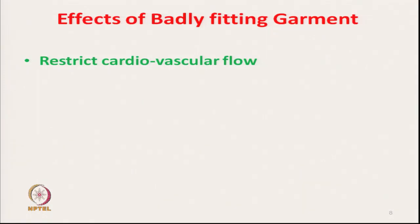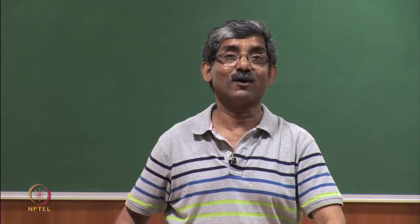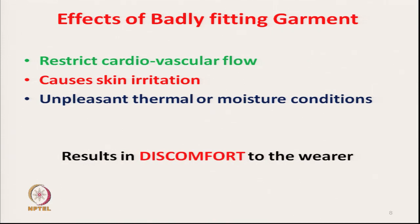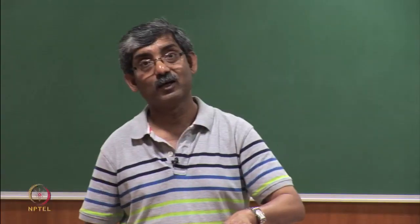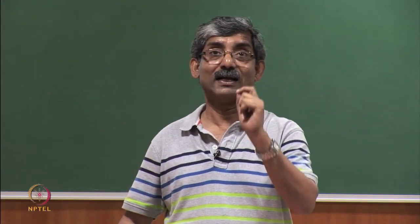A badly fitted garment restricts cardiovascular flow if it is very tight. It causes skin irritation - fabric with a rough surface in a tight fit will give a sensation of irritation. It creates unpleasant thermal and moisture conditions; sometimes it creates moisture if we cannot control the microclimate condition, resulting in overall discomfort. All these can be controlled by proper fit. All the negative aspects of fabric can, to some extent, be eliminated by proper designing of clothing and by proper selection of fabric fit.